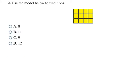Here is another array that shows us three times four. You can see that one side of the array has a length of three blocks and the other side has a length of four blocks — that's why it's a three by four array. You could count each row by threes (3, 6, 9, 12) or by fours (4, 8, 12), or just count each block individually: one through twelve. No matter which way you do it, three times four equals twelve, which is choice D.